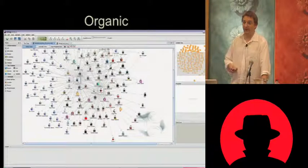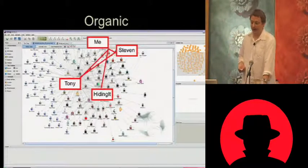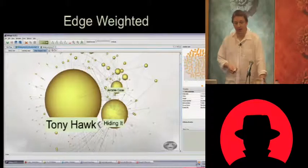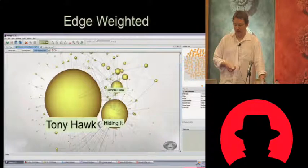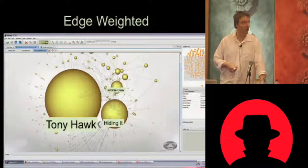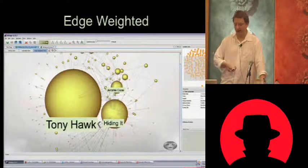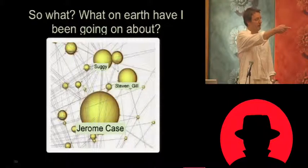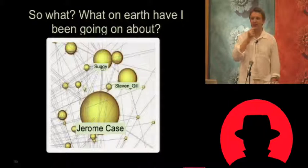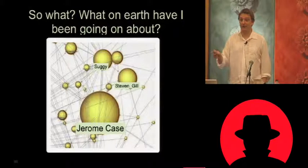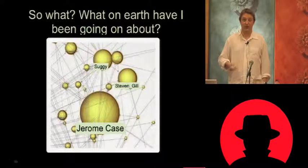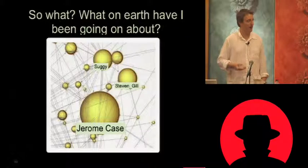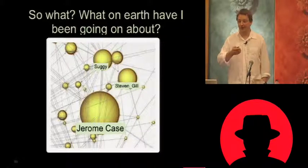Here you can see at-hiding-it in the top left-hand corner, Tony Hawk, somebody following at-hiding-it, somebody Tony's mentioned, and some correspondence between those two — something's going on there. There's another view in Maltego that highlights the lines. If you apply edge-weighting, you can see who are the top talkers in that Twitter event. You'll see Tony Hawk and hiding-it. And here you see there's me, Stephen Gill, and Jerome Case. I didn't even know Jerome Case had a Twitter account — but this guy was the one who sent me the skateboard, Tony Hawk's right-hand man. He's got a Twitter account, he's tweeting, and before I used this graph I didn't know that.